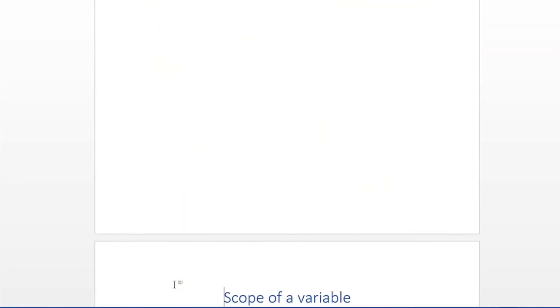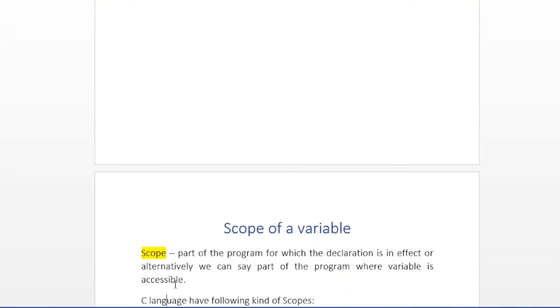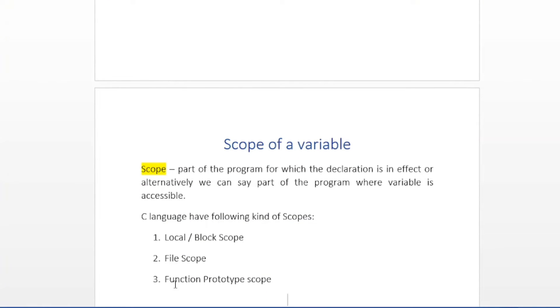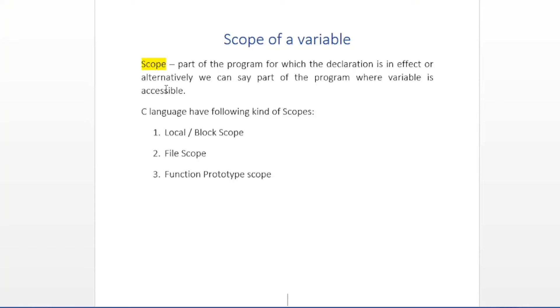So, with external storage class, the difference between definition and declaration should now be clear. After this, we have another concept: the scope of a variable. Scope means, in our program where we have different statements and different parts separated by blocks and brackets, the part of the program for which a declaration is in effect — or alternatively, the part of the program where the variable is accessible. C has three kinds of scope: local or block scope, file scope, and function prototype scope.